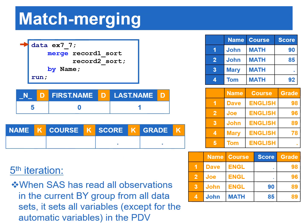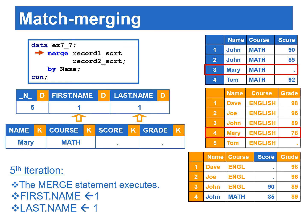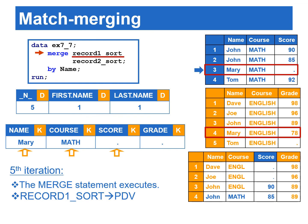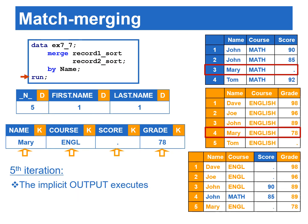At the beginning of the fifth iteration, SAS has read all observations in the current by group from all data sets, and sets all variables in the PDV to missing except for automatic variables. The fourth by group is when name equals Mary — there is one observation each from record one sort and record two sort. When the merge statement executes, first.name and last.name are set to one. SAS copies the observation where name equals Mary from record one sort to the PDV, then copies the observation where name equals Mary from record two sort. Again, the value of the course variable is replaced with the new value from record two sort. The implicit output copies the contents from the PDV to the output data.